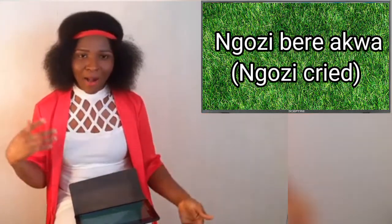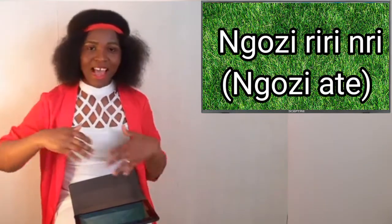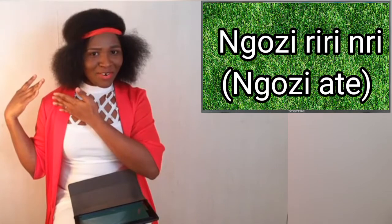For example: 'Ngozi bere akwa' — meaning Ngozi cried. 'On ebe akwa, ibe akwa.' And 'riri' — 'I riri' — which means 'I ate,' something that has already happened, past tense. So when you want to say that, you use 'riri' because it already happened. I'll list out examples of common Igbo verbs that you will encounter in your day-to-day Igbo conversation.